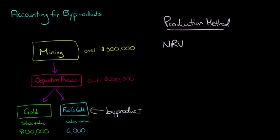Let's just assume in this case that the net realizable value is the same as the sales value of $6,000. You got the fool's gold, your friend comes by and buys it. There's no additional cost. So what's going to happen is this.